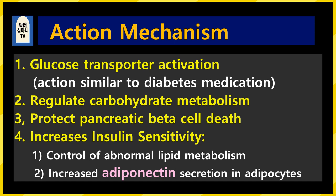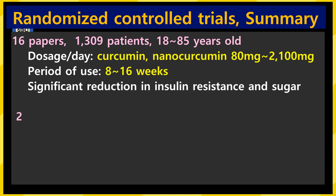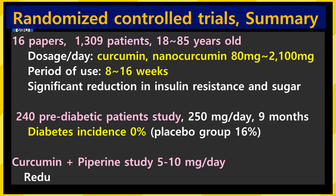By the way, turmeric increases adiponectin secretion. Looking at clinical study results published so far — a total of 16 papers, 1,309 patients aged 18 to 85. Daily dose of curcumin or nano-curcumin is 80 mg to 2,100 mg. When curcumin is made into nanoparticles, even taking only one-tenth of it produces similar effects. The duration of treatment ranges from 8 to 16 weeks.